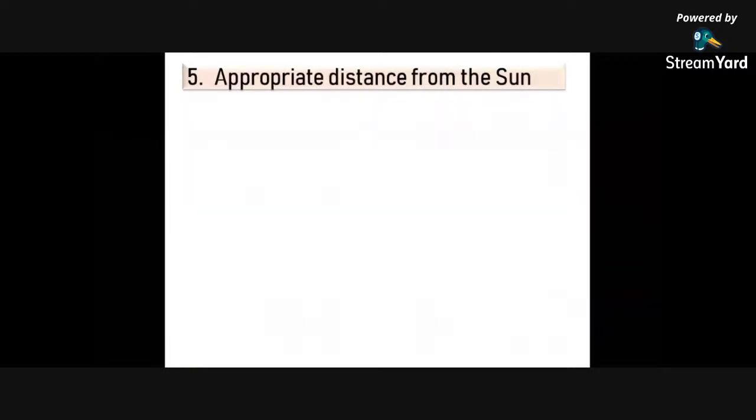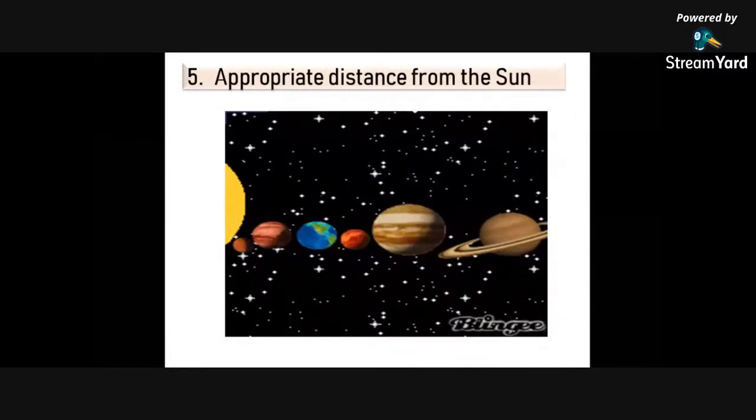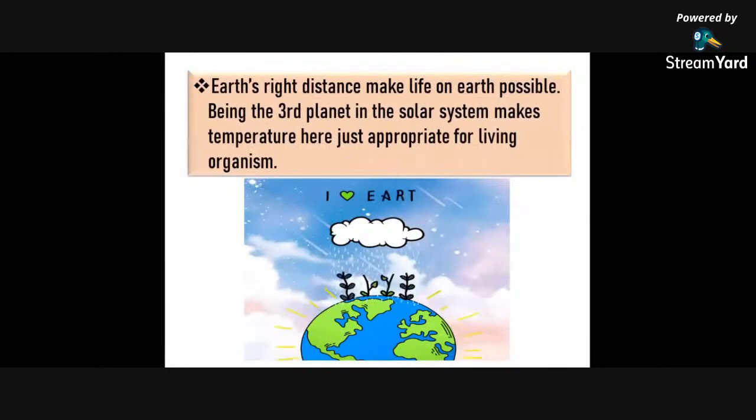Next is appropriate distance from the Sun. The Earth is 149.5 million kilometers away from the Sun. Earth's right distance makes life on Earth possible. Being the third planet in the solar system makes temperature here just appropriate for living organisms. With the right distance from the Sun, the Sun warms our seas, steers our atmosphere, generates weather patterns, and gives energy to the growing plants that provide food and oxygen for life on Earth.